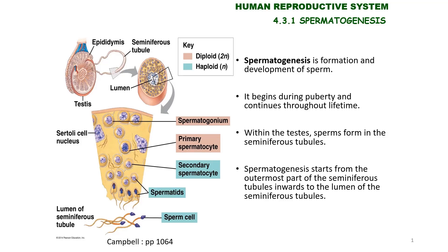Spermatogenesis is the process of formation and development of sperm. It begins in a male during puberty and continues throughout his lifetime. Within the testis, sperm form in the seminiferous tubule.